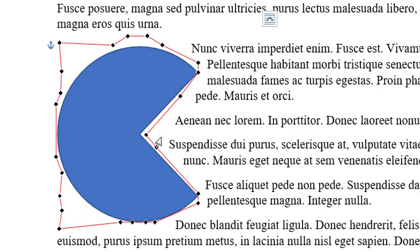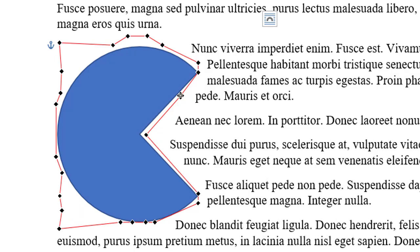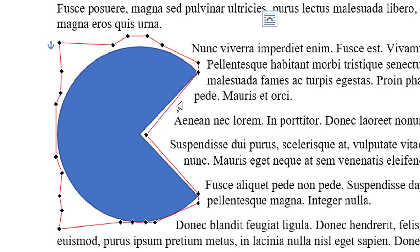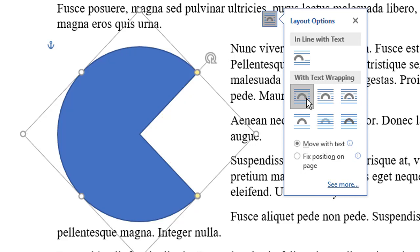To remove a wrap point, Ctrl-click on an existing point. See the mouse pointer change to an X? Click, and it's gone. Wrap points remain as long as you retain Tight or Through as the object's layout option. If you switch to another layout option, all your wrap points are discarded.